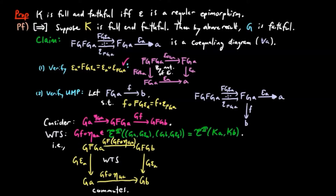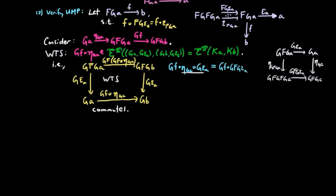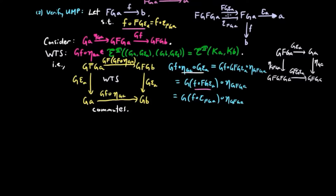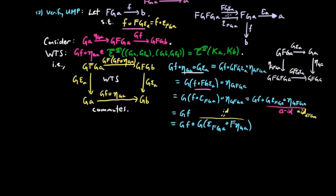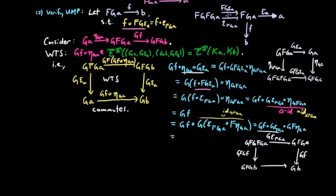We want to show GF(eta_{GA}) is a morphism in the Eilenberg-Moore category from KA to KB. In other words, we want to show the following square commutes. We have GF(eta_{GA}) ∘ G(epsilon_A) equals GF ∘ G(epsilon_A) ∘ eta_{GF(GA)} by the naturality of eta on the right. We factor out G in the left-hand composition. Using the fact that F co-equalizes FG(epsilon_A) and epsilon_{FGA}, we obtain GF(epsilon_{FGA}) ∘ eta_{GF(GA)}. We distribute G and see that the right-hand composition is the identity morphism by the triangle identity for the adjoint situation FG, so we end up with GF. Then pre-composing by the identity in the form of G(epsilon_{FGA}) ∘ F(eta_{GA}), we obtain GF ∘ G(epsilon_{FGA}) ∘ GF(eta_{GA}). Using the naturality of epsilon again, we arrive at G(epsilon_B) ∘ GF ∘ GF(eta_{GA}), which shows the yellow diagram does in fact commute.